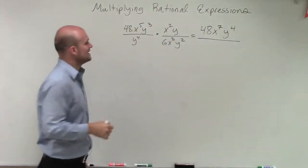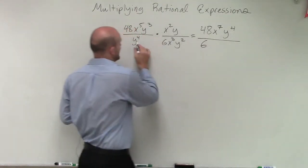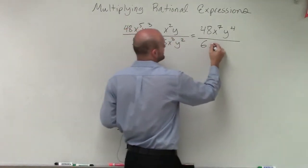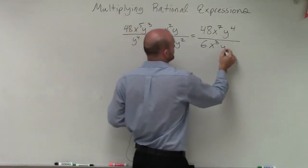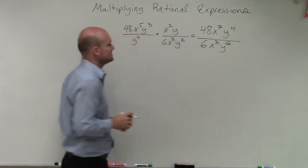When I multiply my denominators, I have 6. Then I have x cubed. And then I have y to the fourth times y squared, which, remembering we're adding them, will be y to the sixth.